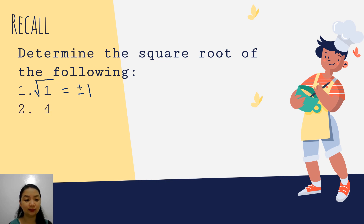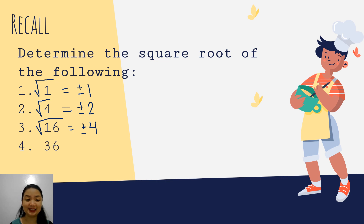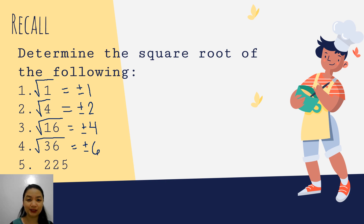How about the next one? The square root of 4 is equal to positive, negative 2. How about the third one? The square root of 16 is positive, negative 4. How about the square root of 36? That is positive, negative 6. And the square root of 225 is positive, negative 15.